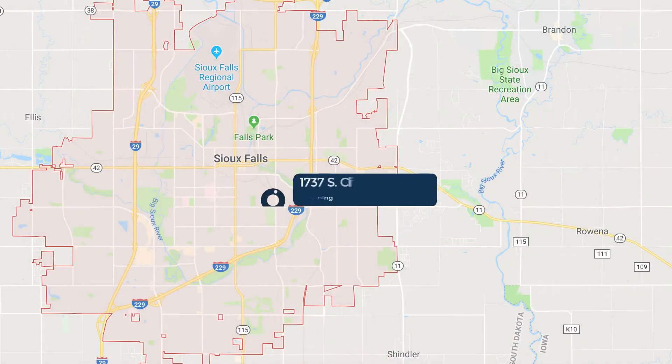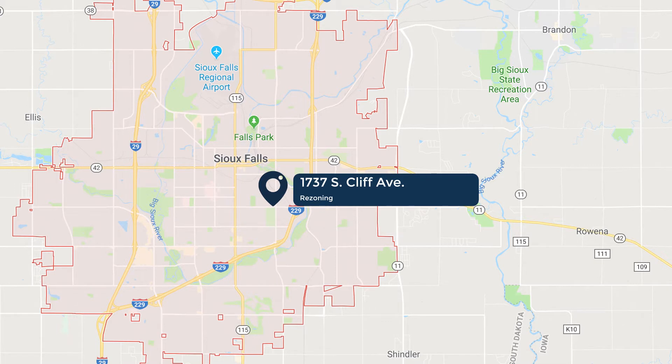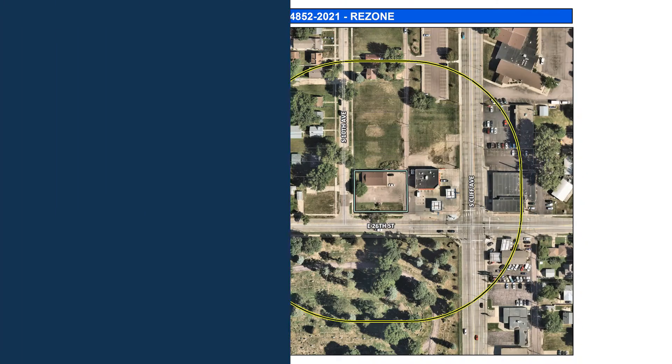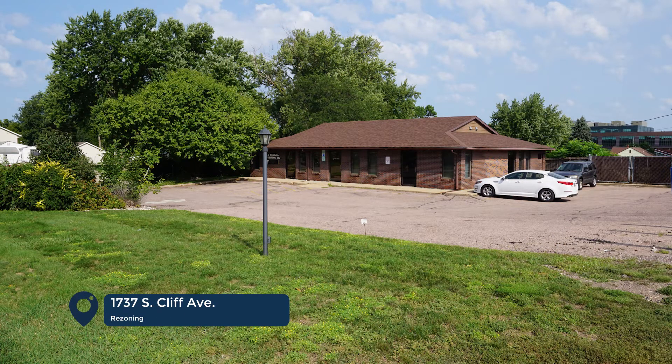First up on our list is a rezone from the O Office District to the C2 Commercial Neighborhood and Streetcar District. That's at 1737 South Cliff Avenue — 26th and Cliff — the Holiday property. They're planning to redevelop that gas station. Just to the west, there was an old dental office that recently moved out, so that property was zoned office. They're going to take that property, zone it commercial, and push the gas station back towards the west. It's a pain to get in and out of there, so this will help that intersection big time — push those entryways further off the intersection and allow more room at the gas pumps.